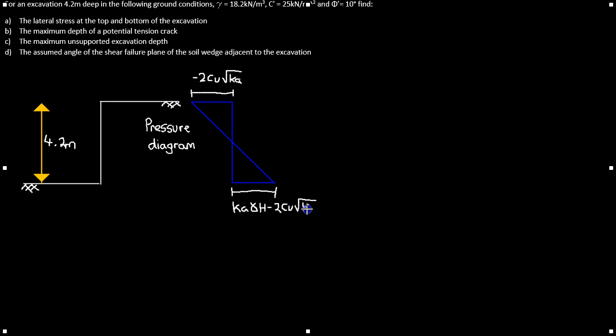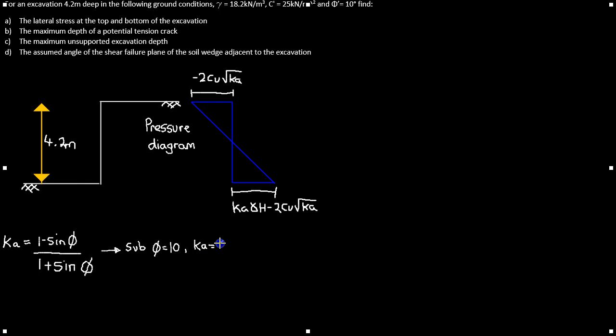We calculate kA, which equals 1 minus sine of the internal friction angle divided by 1 plus sine of the internal friction angle. Substituting 10 degrees as the internal friction angle gives us a kA value of 0.7.